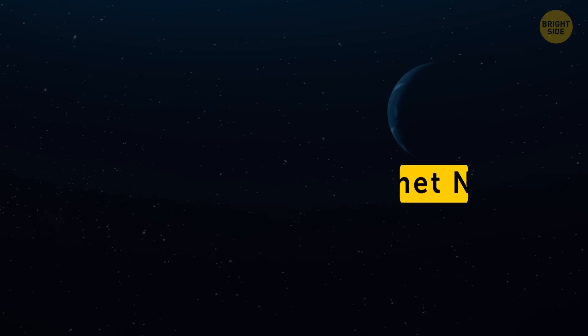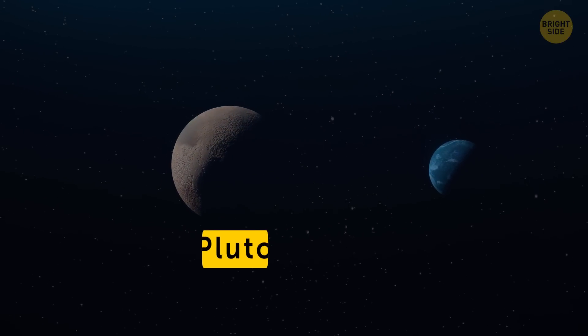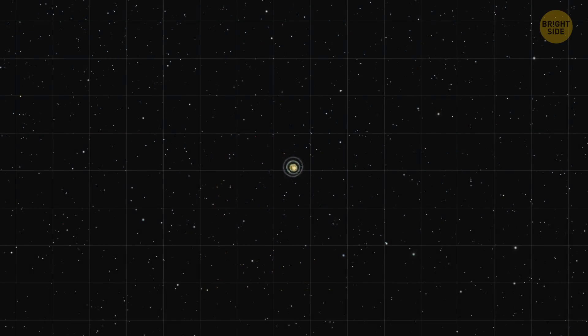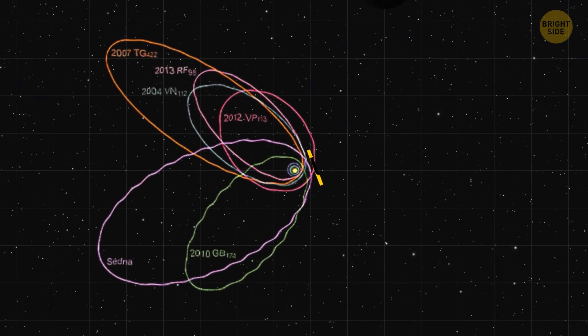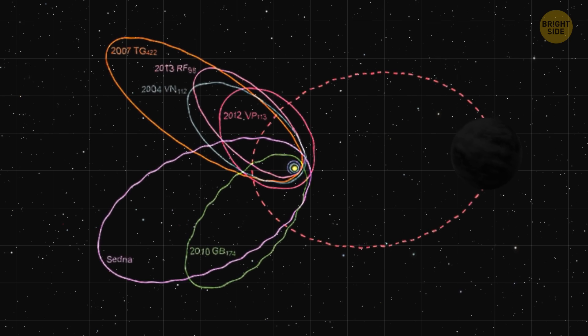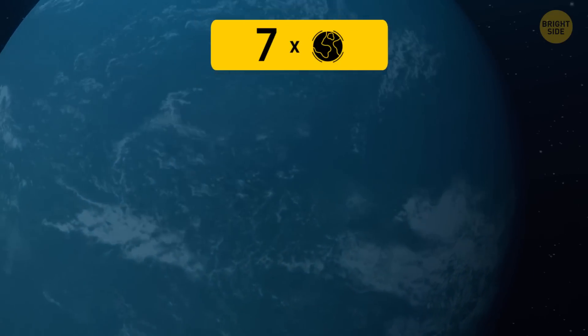There might be a ninth planet with the very original name, Planet Nine, in our solar system. If it exists, it's probably somewhere far beyond Pluto. Astronomers think so because some rocky objects near Neptune move in a weird way as if they were influenced by the gravity of a large, unseen planet. Planet Nine might be a gas or ice giant, seven times the mass of Earth.